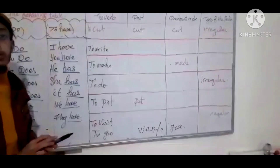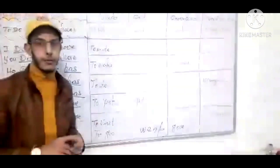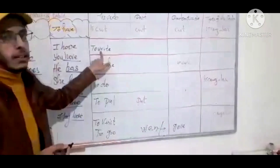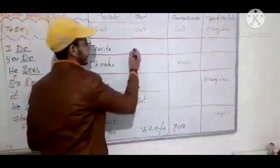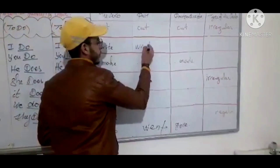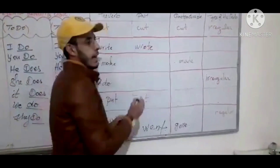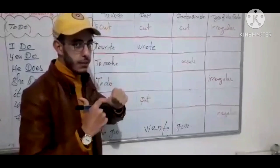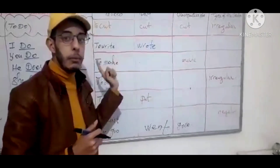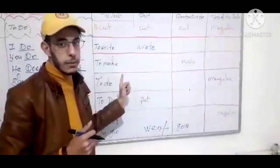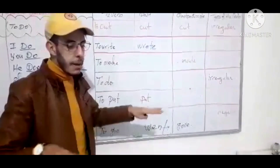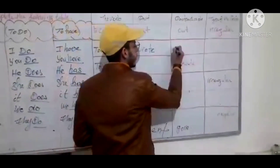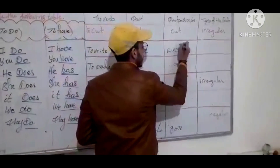Now let's move to the second verb, 'to write.' That's why I always tell you: memorize irregular verbs — they are the basics, it's very important. The past participle is 'written.'